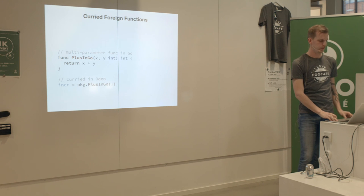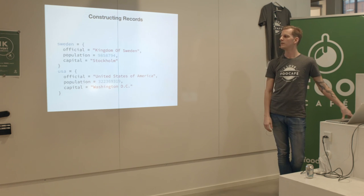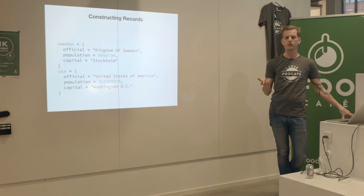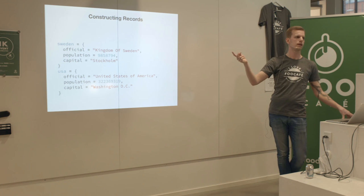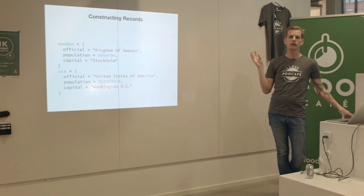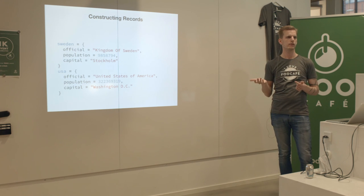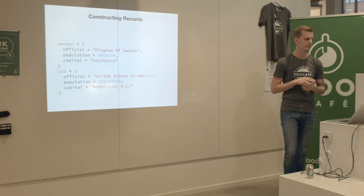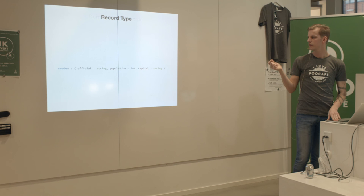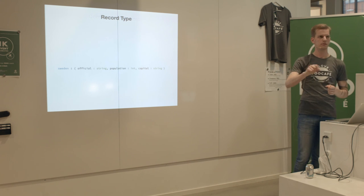A recent feature I think is a very good construct is records. We declare two record values with the same type - they have an 'official' string field, a 'population' int field, and a 'capital' string field. You can look at these basically like structs in Go, but also a bit like JavaScript objects or a strongly typed map. You know exactly what fields are in it, but it's not as strict as a struct in Go or C.